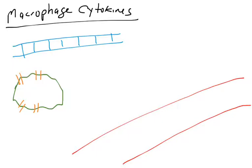We're not going to learn all of them, but we will learn a number of them. You'll have to know their names, where they're released from, what they go to, and the effects on their targets. So we're going to learn about four different cytokines in this video.